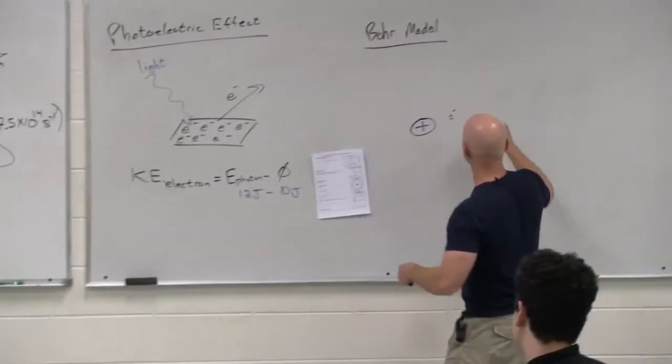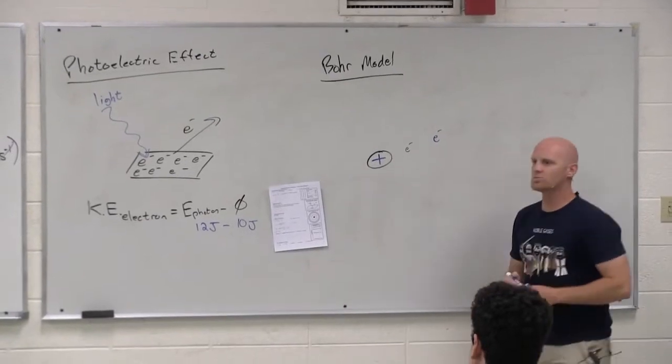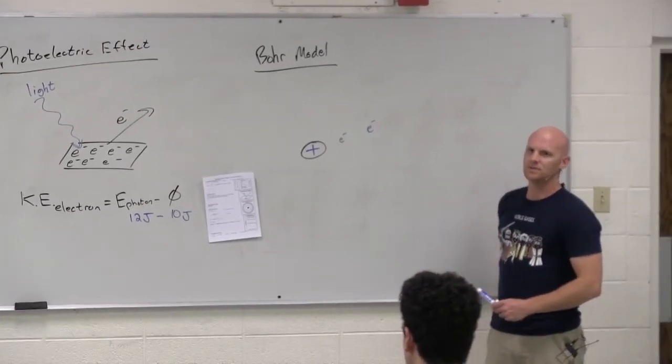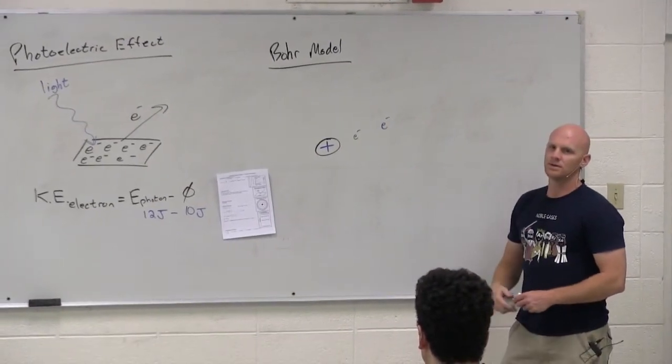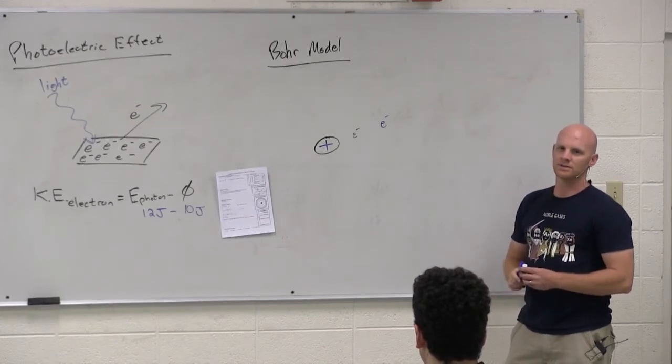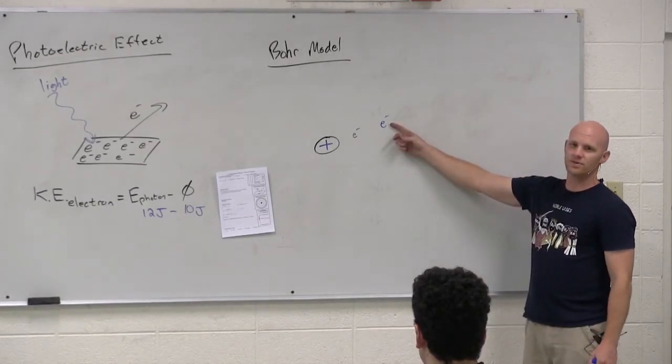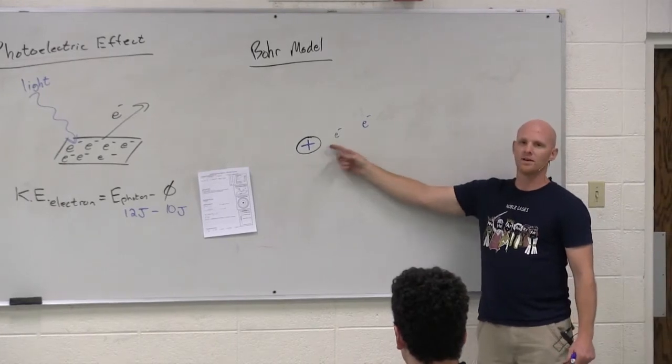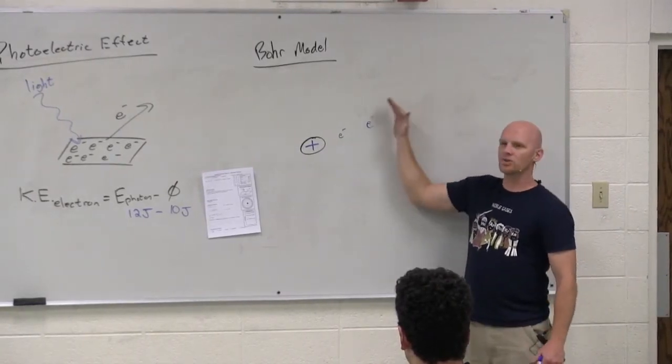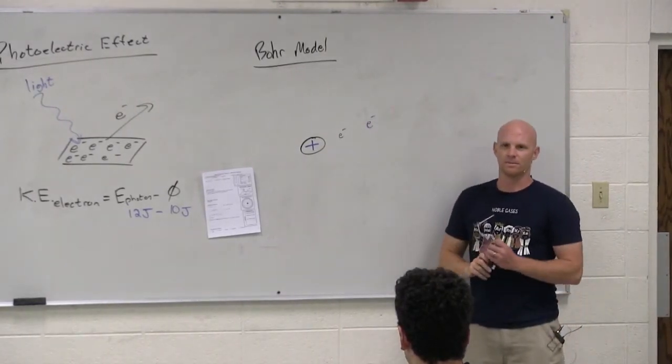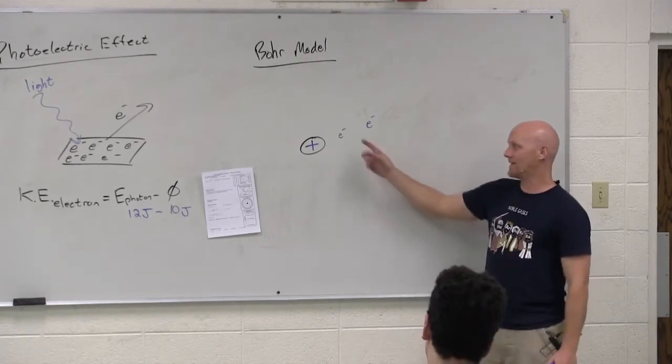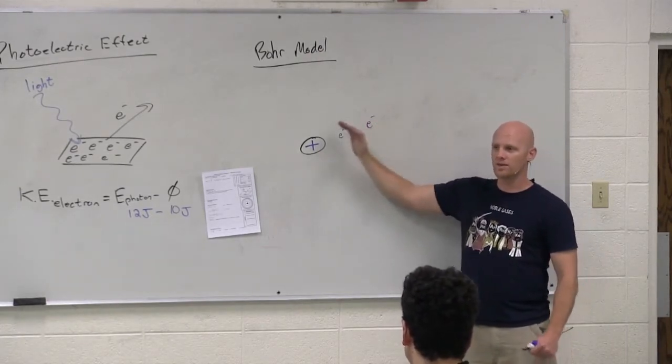In this case, if I have two electrons here, which one has more potential energy? The one that's further away from what he loves. The closer you get, the lower your potential energy. So the closer you get to where you want to be, and they love this nucleus, the closer you are in, the lower your potential energy.